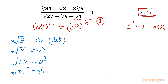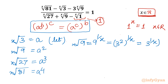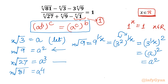Let me derive how x-th root of 9 equals a squared. x-th root of 9 is 9^(1/x). Now 9 can be written as 3 squared, whole power 1/x. Using the powerful identity, I will swap both the powers, writing 3^(1/x) whole power 2. This is our a, whole power 2 — that means a squared. Similarly we derive a cubed for x-th root of 27, and a to the power 4 for x-th root of 81.